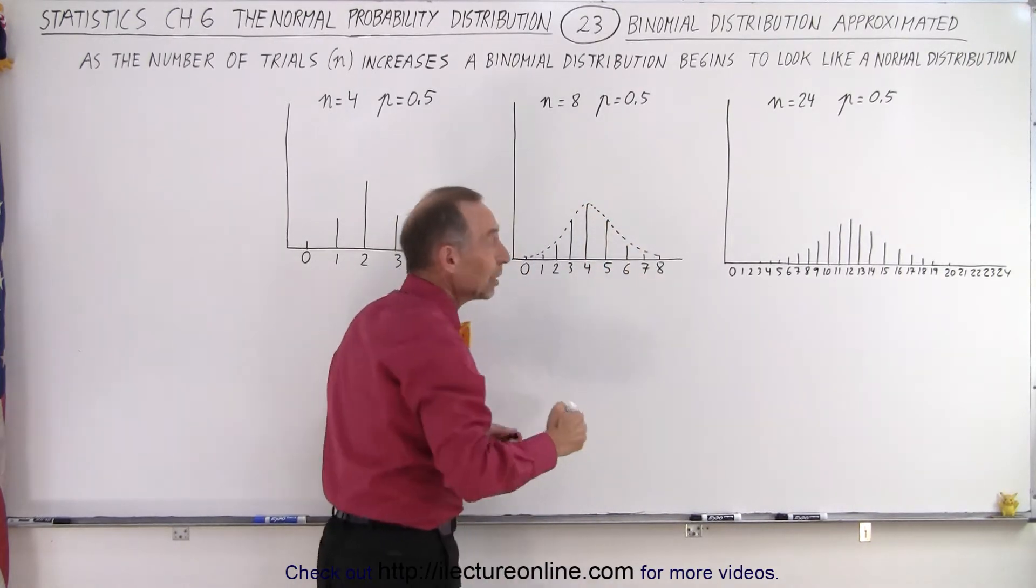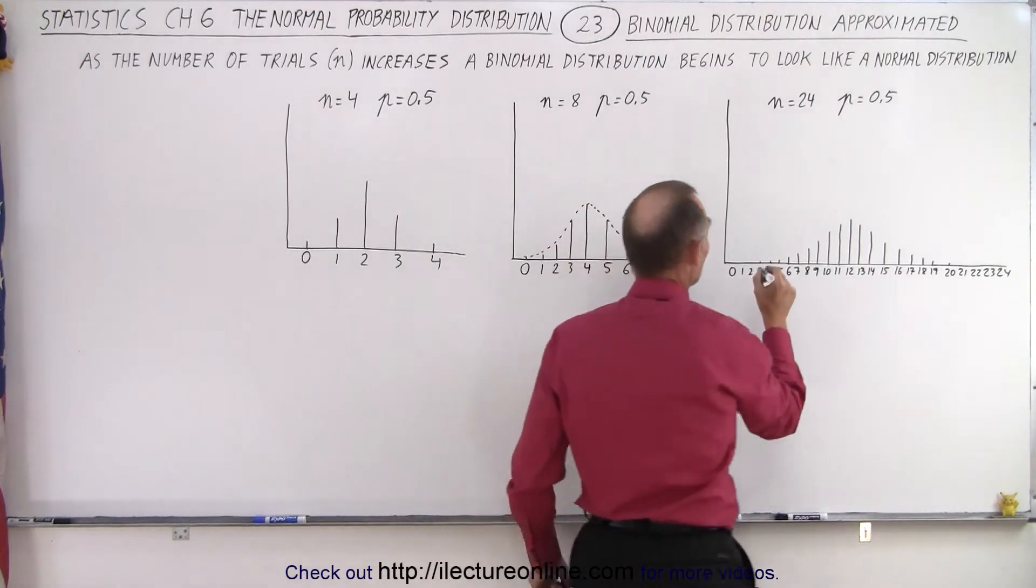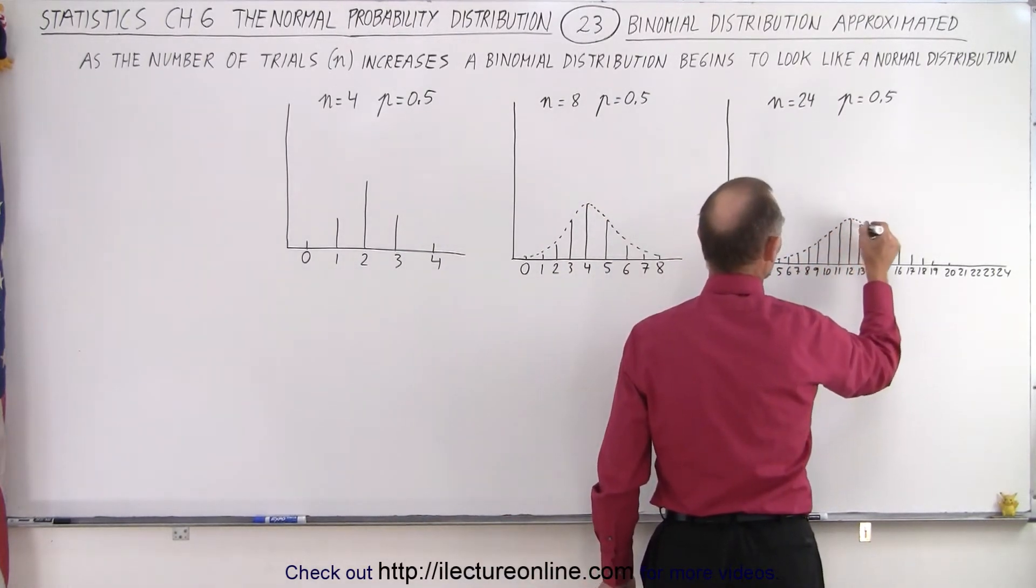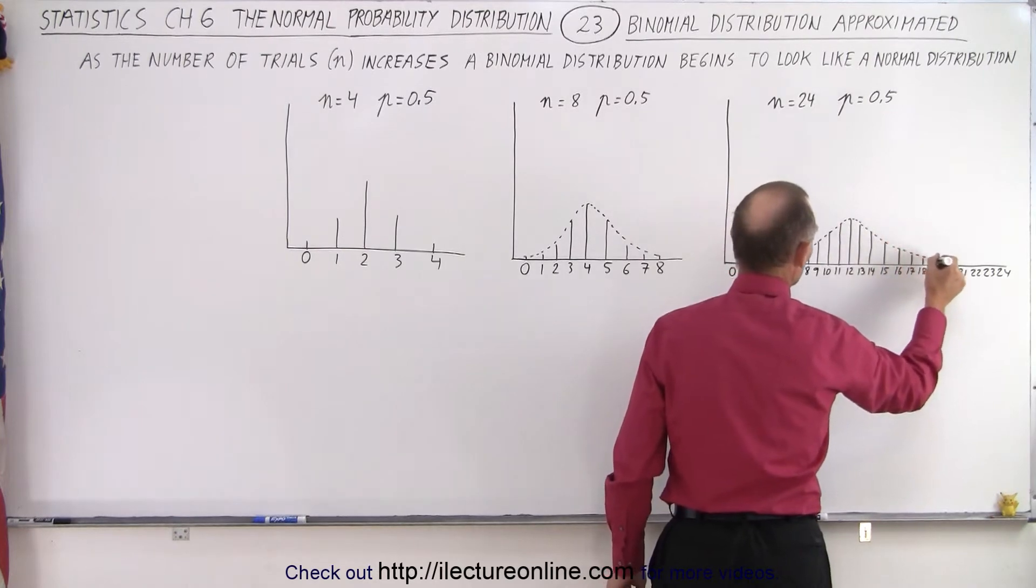And then if we increase the number of trials again to 24, we really begin to see the very interesting, peculiar shape of a normal distribution.